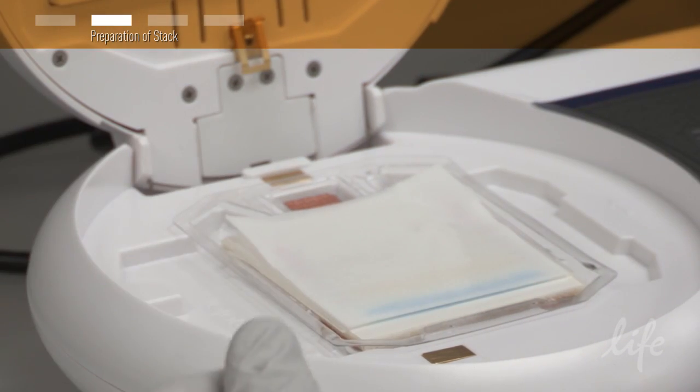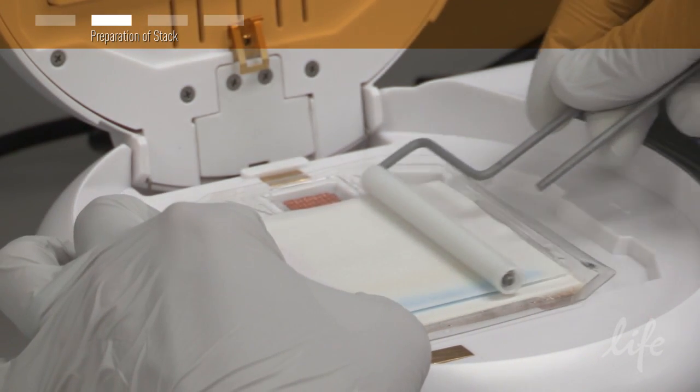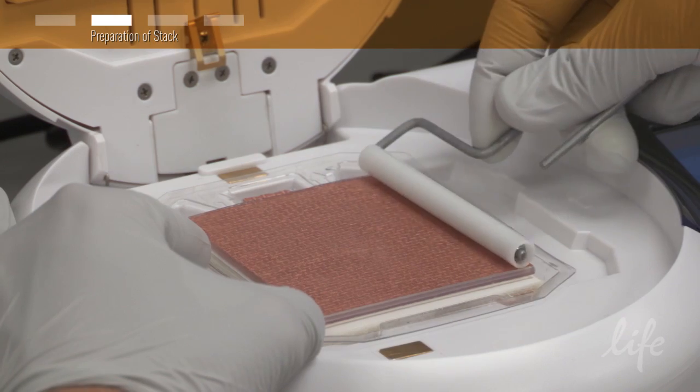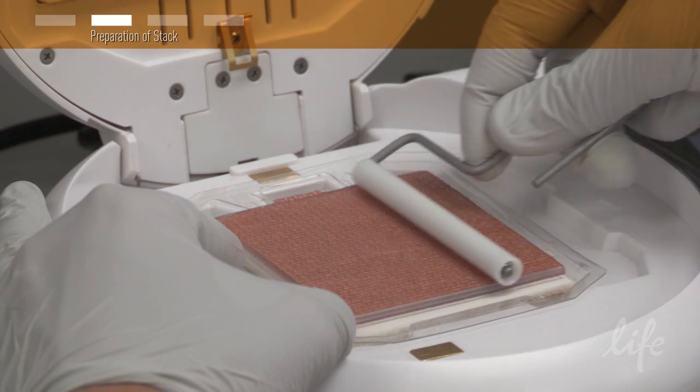Then, remove air bubbles using the roller. Place the top stack over the pre-soaked filter paper and again, remove air bubbles using the roller.